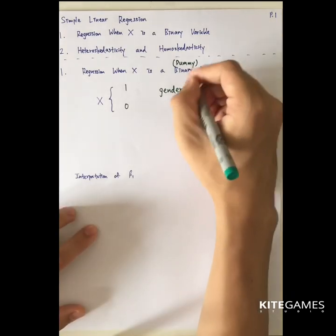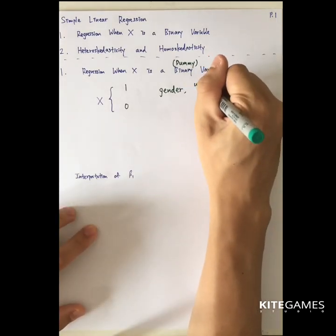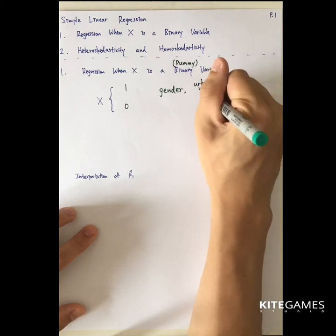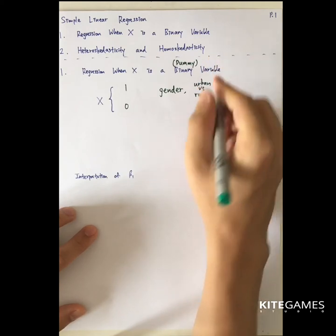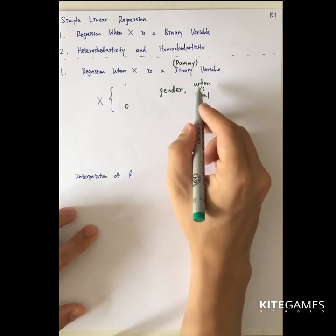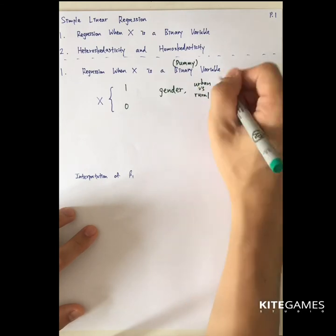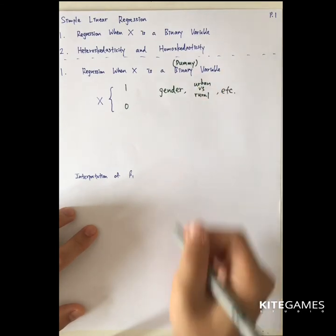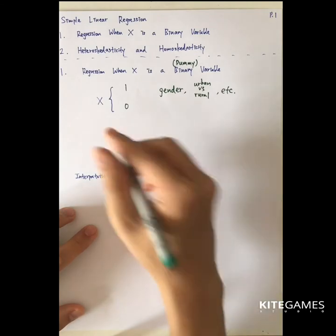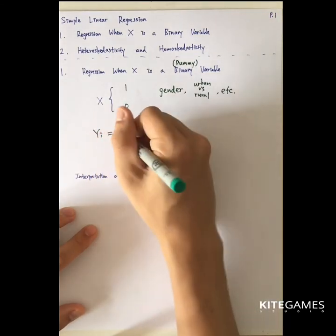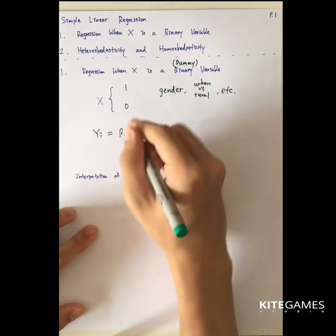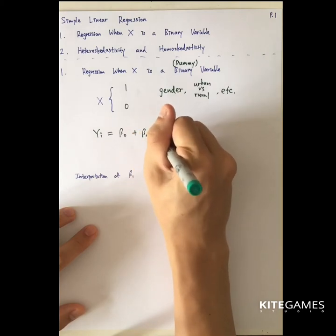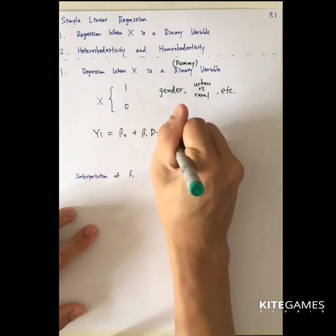Similar to the gender example, maybe we want to see the income difference between urban and rural. Again, we can set 1 to be urban and 0 to be rural. After that, we can still construct a model: y equals beta 0 plus beta 1 times d_i plus u_i, where d here stands for the binary variable.